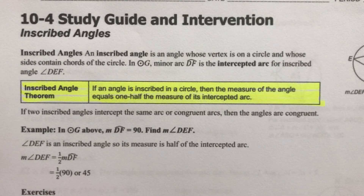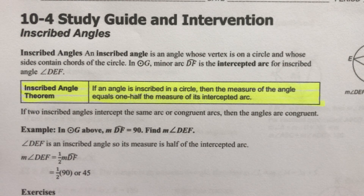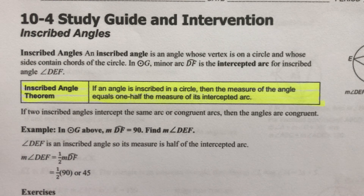This is part one of lesson 10-4, all about inscribed angles. Previously in chapter 10, we've been talking about circles and different parts of circles, and then we started talking about central angles in a circle and the measure of arcs, minor arcs and major arcs, and of course semi-circles, which are exactly 180 degrees.